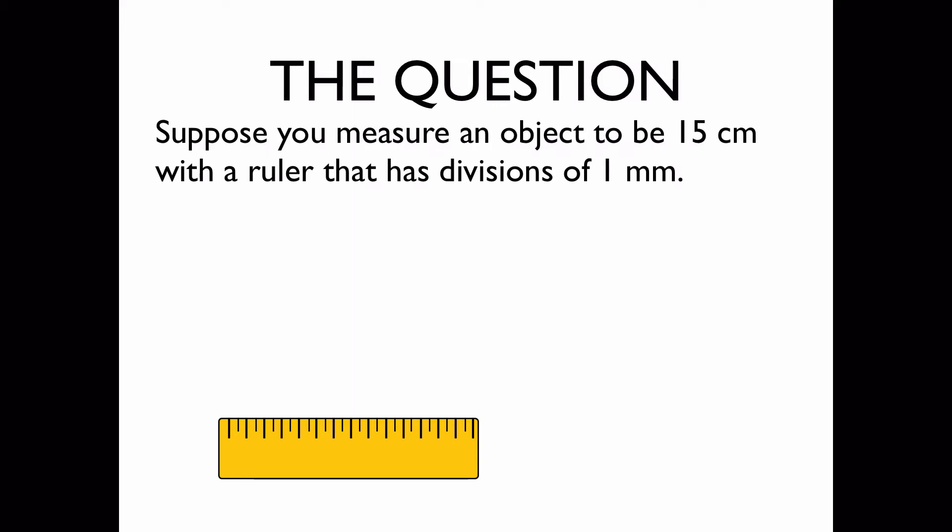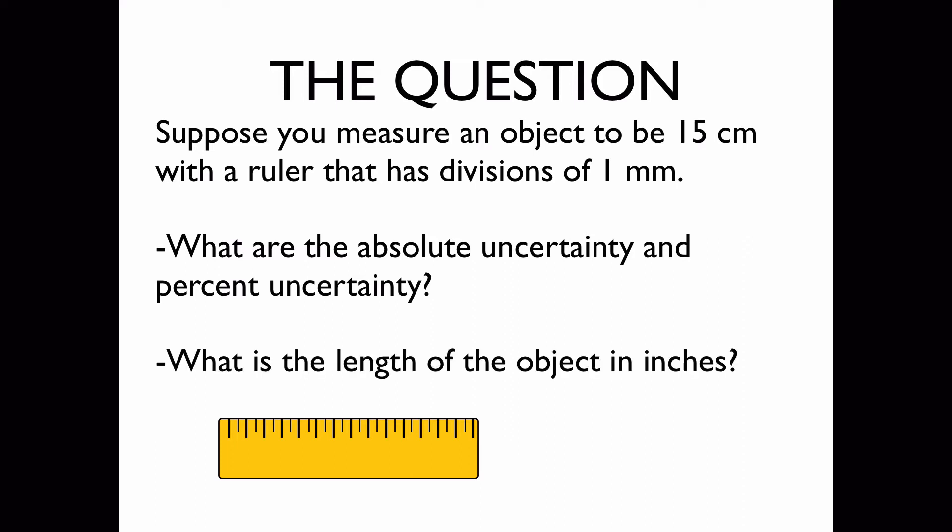The question: Suppose you measure an object to be 15 cm with a ruler that has the smallest divisions of 1 mm. We'd like to know what are the absolute uncertainty and percent uncertainty and what is the length of the object in inches.